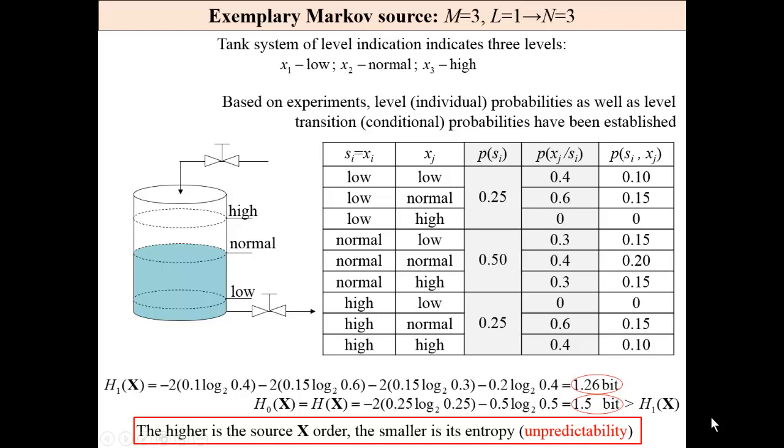Exemplary source: three messages and source of the first order. Our source of information is a tank system level indication. We have three switches: low level switch, normal level switch, and high level switch.